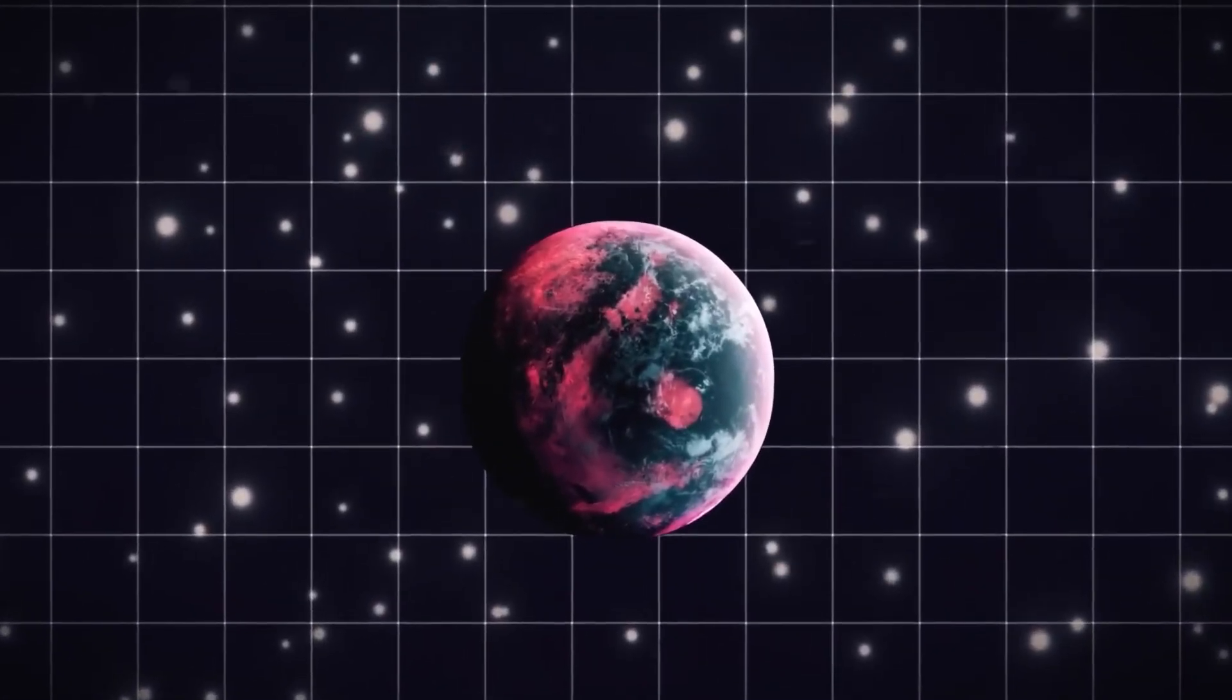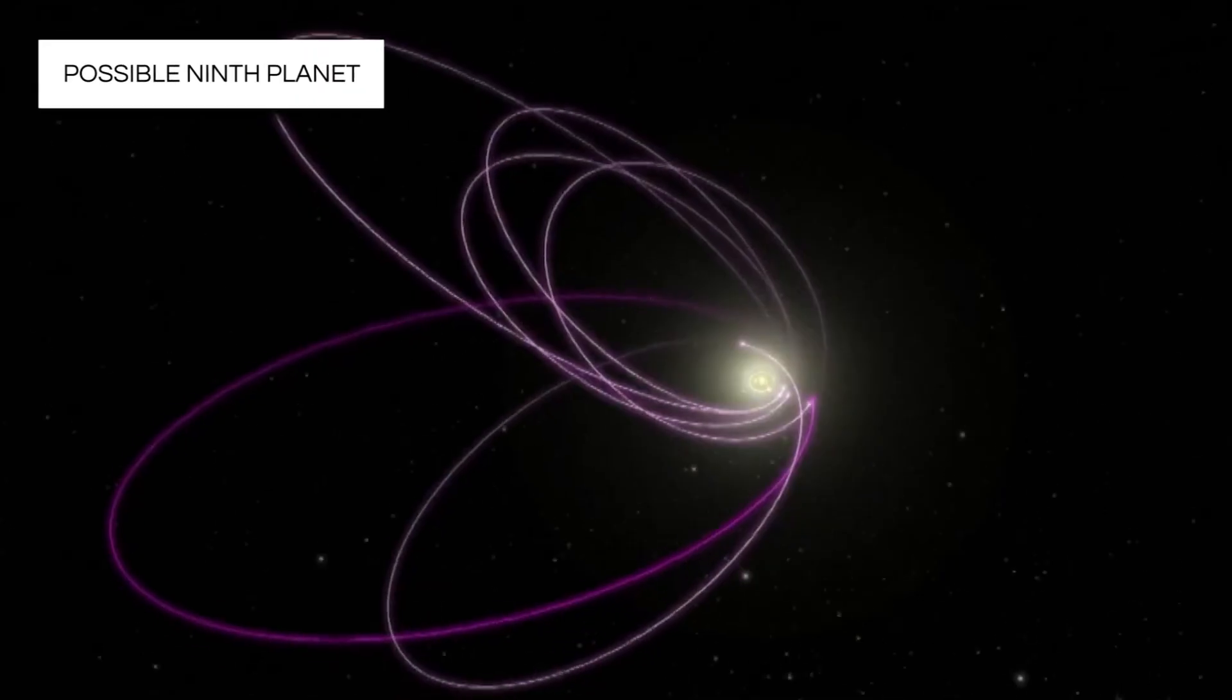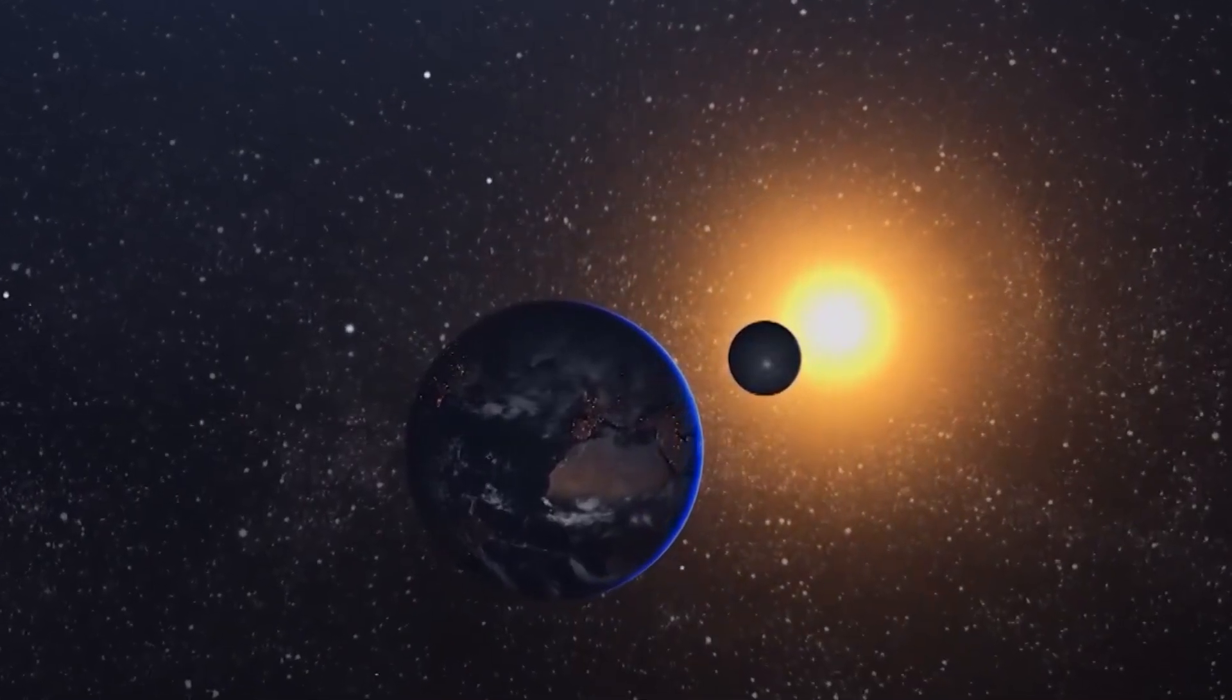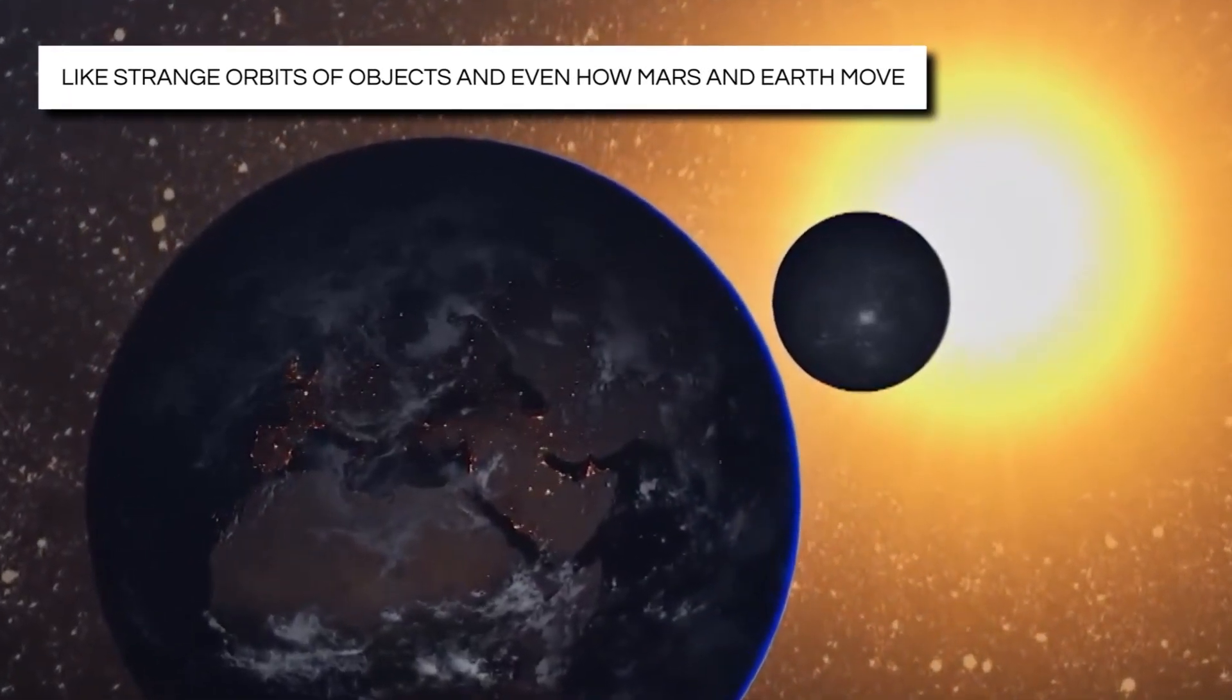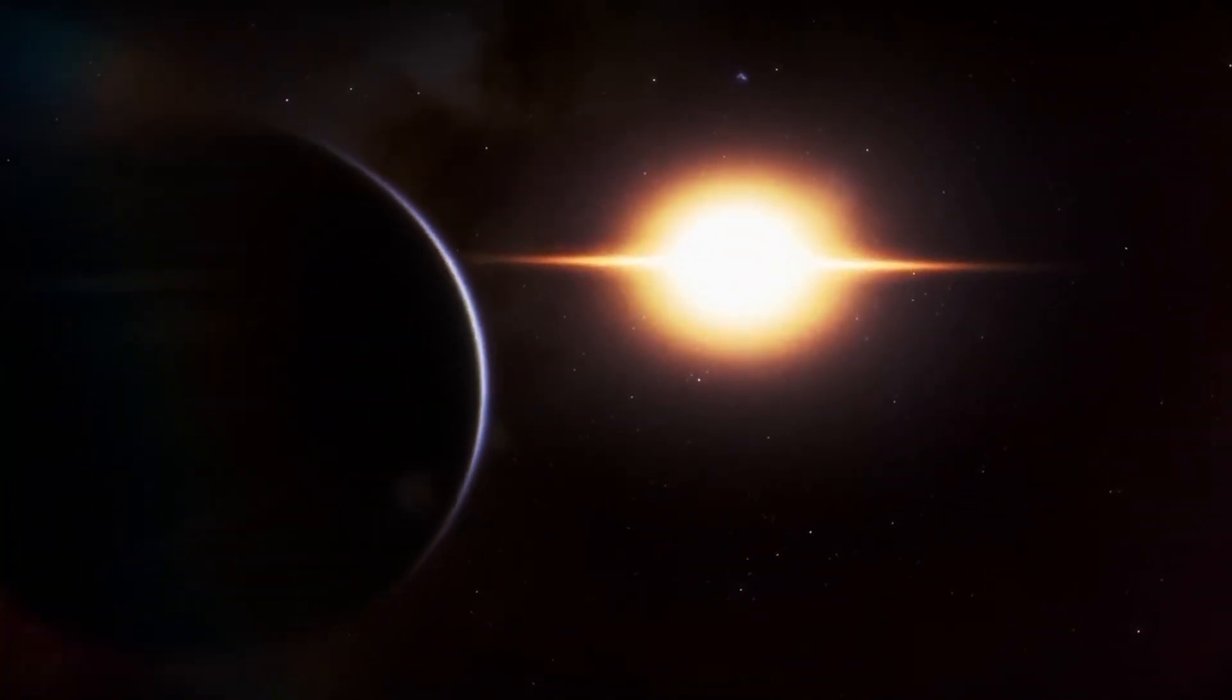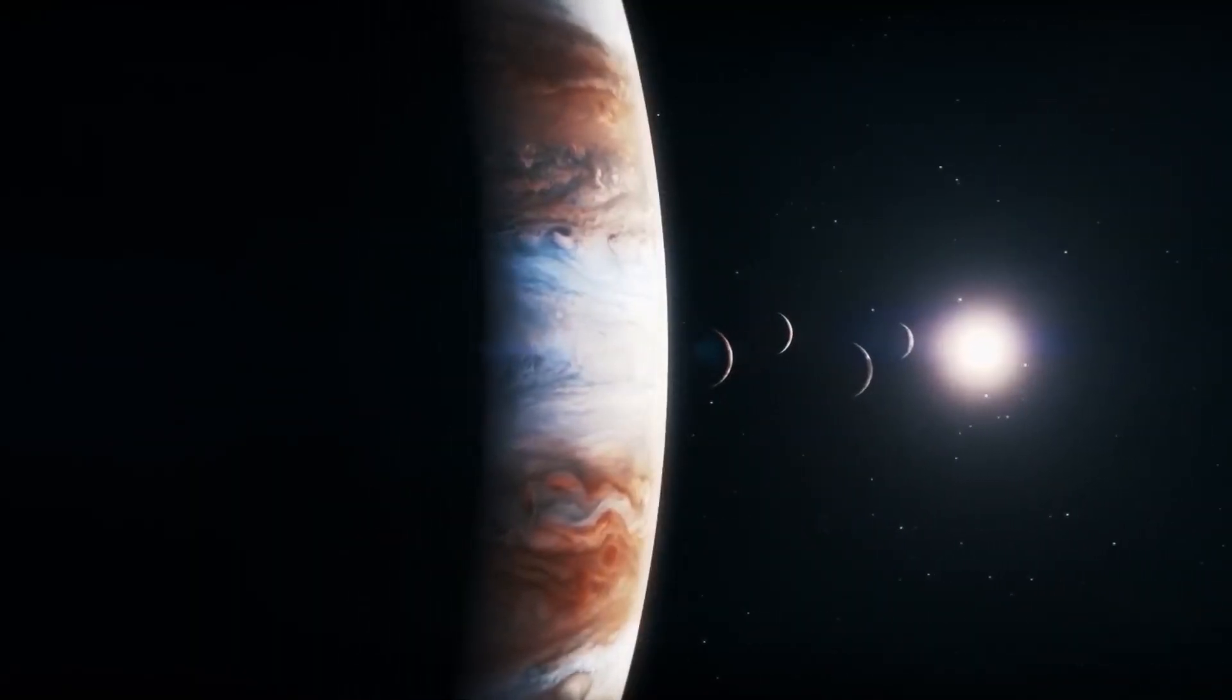In the world of astronomy, there's been a lot of excitement about a possible ninth planet way out there in our solar system, beyond Neptune. This planet could explain some weird stuff happening in space, like strange orbits of objects and even how Mars and Earth move. But here's the deal. Even though scientists got everyone talking about this planet back in 2016, they haven't actually found it yet.